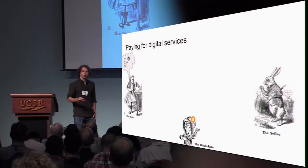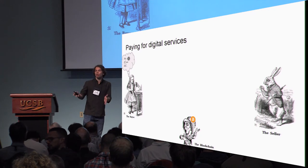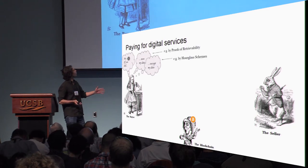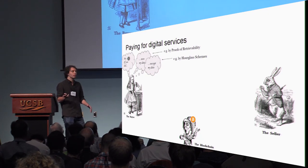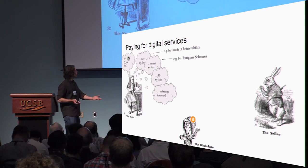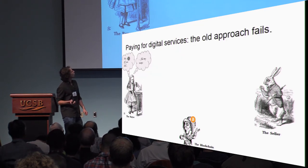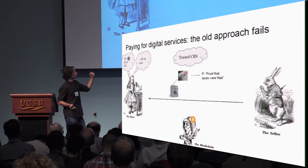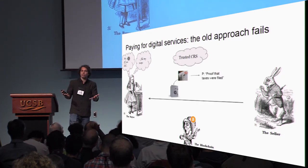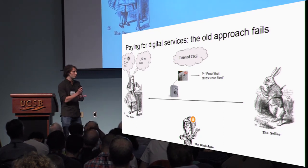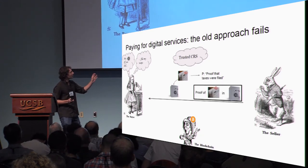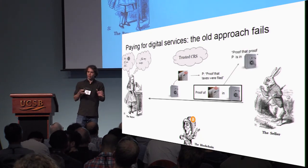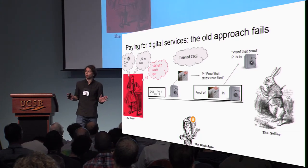Think of a cloud setting. For example, you want to pay your cloud provider every month if, at the end of the month, you verify they're actually storing your data properly or in an encrypted manner. We have protocols to check these properties, and you can think of all sorts of auditing contexts — did they file my taxes correctly, did they submit my homework? Why doesn't the old protocol work? Take the tax-filing example with a trusted CRS. The seller sends you a ciphertext of a witness — some evidence that the taxes were filed, like a shipping receipt. It then proves to you that the ciphertext contains this evidence. But now you already have proof that the service was done. You're done — you just walk away.